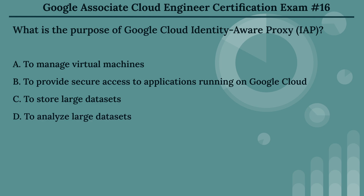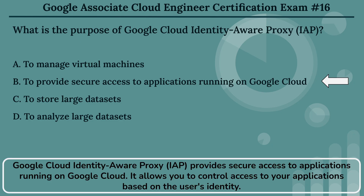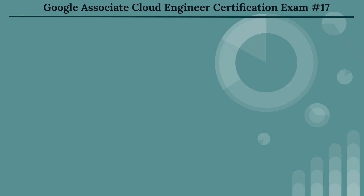The right answer is Option B: to provide secure access to applications running on Google Cloud. Google Cloud Identity-Aware Proxy provides secure access to applications running on Google Cloud. It allows you to control access to your applications based on the user's identity.